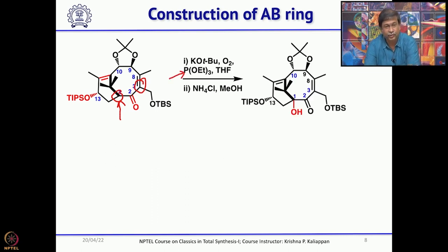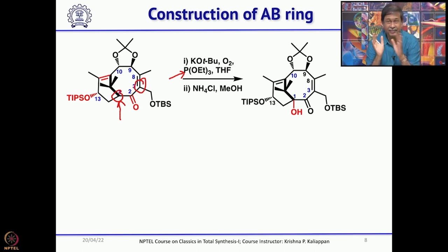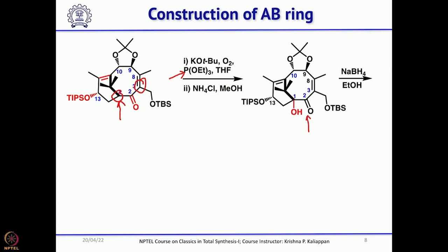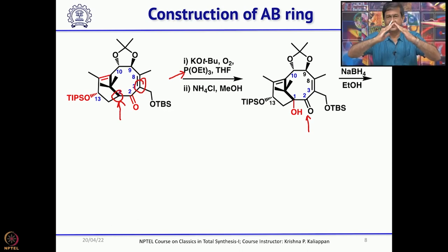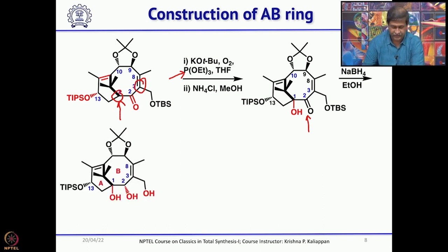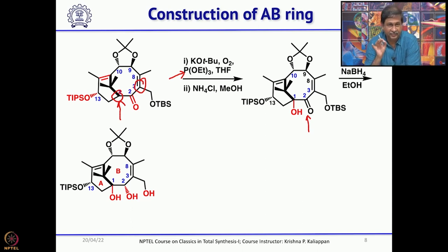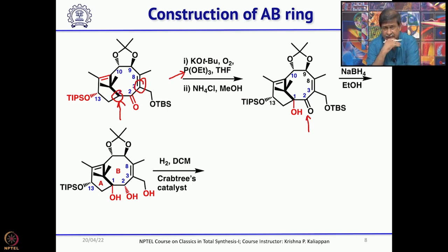The hydroxyl group at the bridgehead position is now introduced. This particular intermediate has all the functional groups required for Taxol in the A and B rings. Next, you should reduce the ketone to a hydroxyl group. The hydride will come from the beta side, so when you reduce you get the alpha alcohol. In Taxol, if you look carefully at the structure, this hydroxyl is alpha — it is in Taxol as a benzoate. So now the hydroxyl should be benzoylated, which can be done a little later.